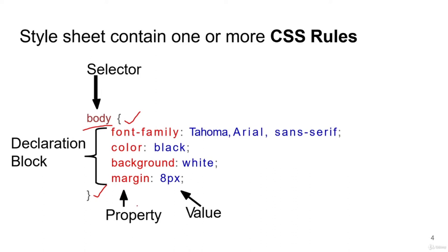For the body tag I want to give a color, background color, and font family — I can also specify the font family to be applied — and I can also give margin to it. Every time you have a body tag in your HTML file, you can use these four common attributes: font family, color, background color, and margin. These are called declaration blocks.